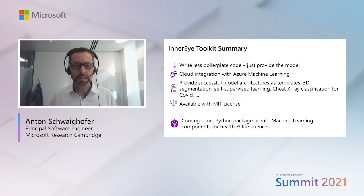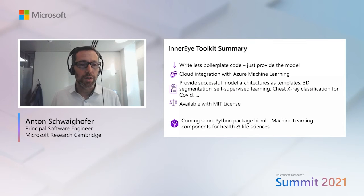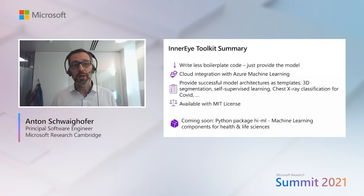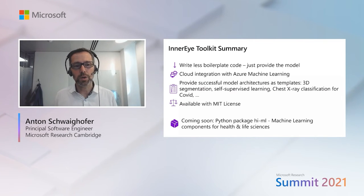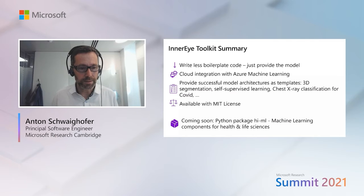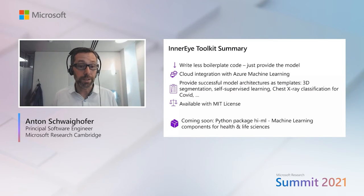This brings me to my summary. If you'd like to write less boilerplate code for your AI model training, give the InnerEye Toolbox a try. You get essentially no-code cloud integration, and you can also build upon all the successful model architectures we have used in our work — including image segmentation, self-supervised learning, chest X-ray classification — and everything's available with a rather permissive license. Some of these components are also being packaged into a separate Python package for even easier reusability. Now let me hand over to Michael.